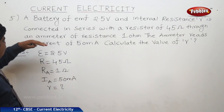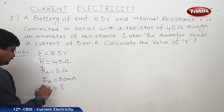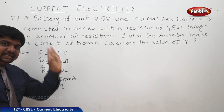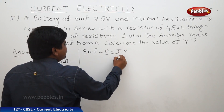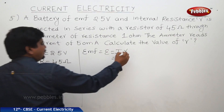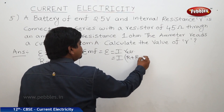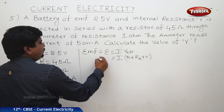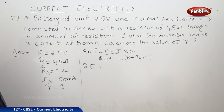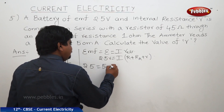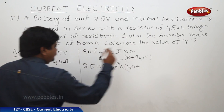The resistor of 45 ohms, the ammeter resistance of 1 ohm, and the internal resistance R are all connected in series. Therefore, EMF equals I times R_effective, where R_effective equals R plus R_ammeter plus R_external. The EMF is 2.5 volts. Substituting: 2.5 equals 50 milliamperes (50 × 10⁻³ amperes) times (45 + 1 + R).